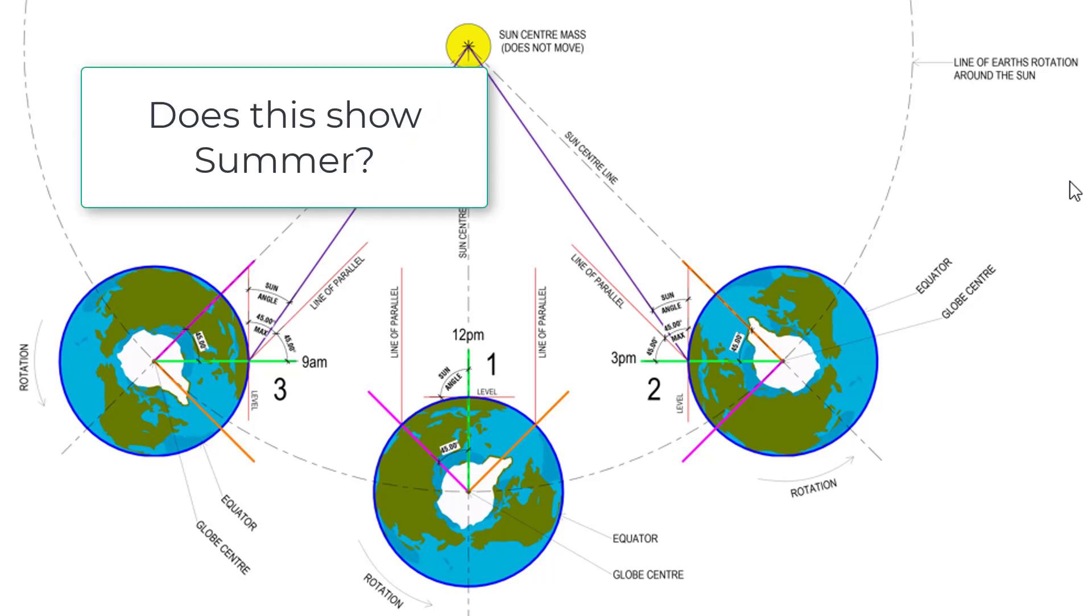Number one, does this show summertime? Your observations, the ones we discussed on the live stream, were taken during the summer time. Does this diagram show summer? How would we show summer? As I reminded you during the live stream, summer days are longer than winter days. I mean how long the Sun is up above the horizon is longer in the summer and that has something to do with the tilt of the planet. We know this right?